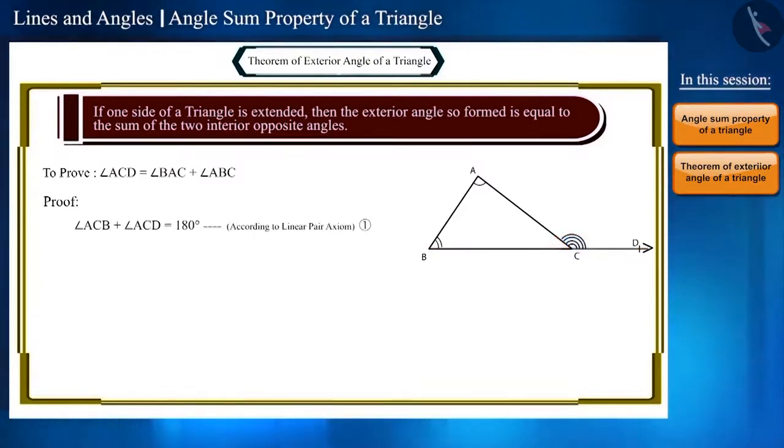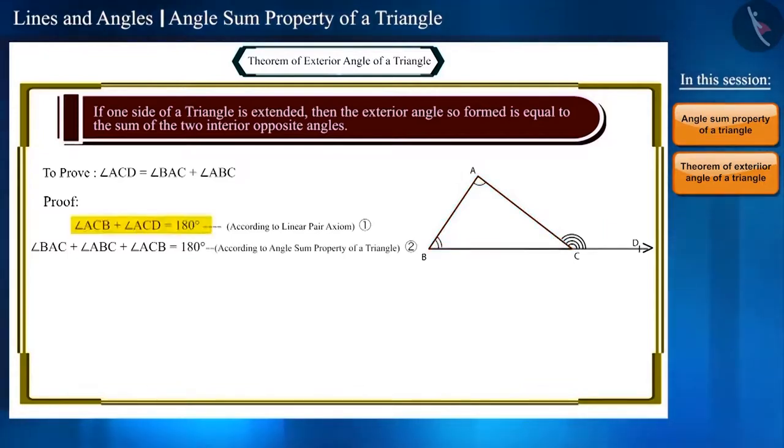And as we just learned, the sum of the three angles of a triangle is 180 degrees, which means angle BAC plus angle ABC plus angle ACB will be equal to 180 degrees. Let us call this equation 2.